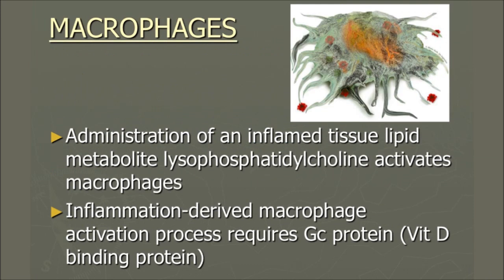Administration of an inflamed tissue lipid metabolite, lyso-phosphatidylcholine, activates macrophages. This was done in vitro by groups like Yamamoto from Philadelphia. Inflammation-derived macrophage activation processes require GC protein, and GC protein is the vitamin D binding protein. Vitamin D is a lipid — it's a steroid — so it cannot be dissolved in blood. The body puts a small layer of protein around it, and that protein is called the GC protein.